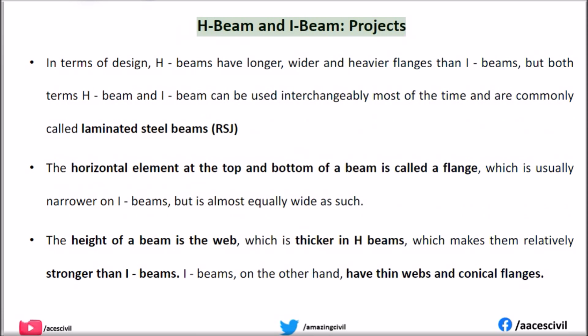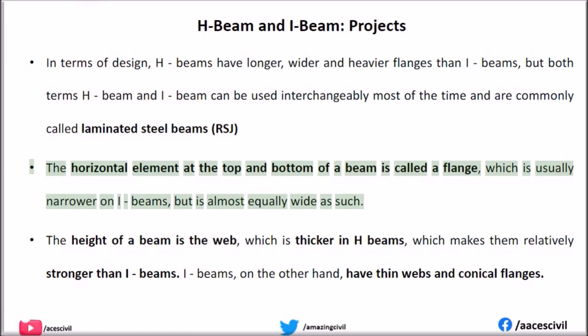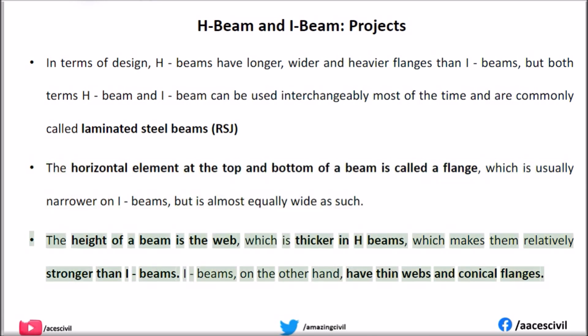H-beam and I-beam — Design. In terms of design, H-beams have longer, wider, and heavier flanges than I-beams. Both terms H-beam and I-beam can be used interchangeably most of the time and are commonly called laminated steel beams. The horizontal element at the top and bottom of a beam is called a flange, which is usually narrower on I-beams. The height of a beam is the web, which is thicker in H-beams, making them relatively stronger than I-beams. I-beams, on the other hand, have thin webs and conical flanges.